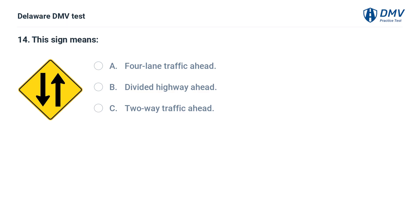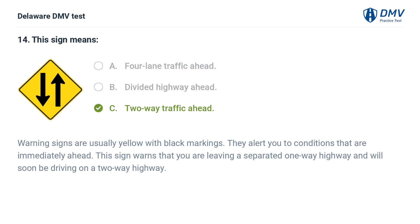This sign means: A. Four lane traffic ahead. B. Divided highway ahead. C. Two way traffic ahead. Answer: C. Two way traffic ahead. Warning signs are usually yellow with black markings. They alert you to conditions that are immediately ahead. This sign warns that you are leaving a separated one-way highway and will soon be driving on a two-way highway.